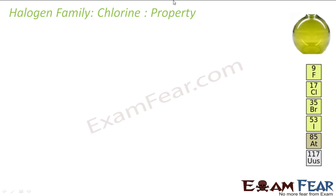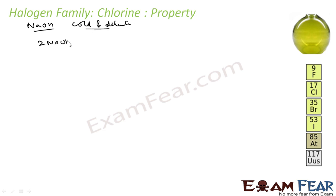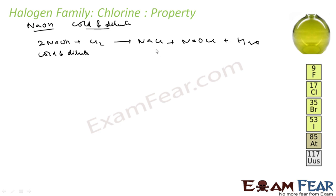Chlorine reacts differently with NaOH depending on conditions. With cold and dilute NaOH, chlorine produces a mixture of sodium chloride (NaCl) and sodium hypochlorite (NaOCl) along with water. So with cold and dilute alkali, you get chloride and hypochlorite.